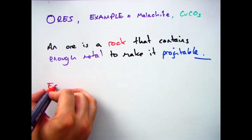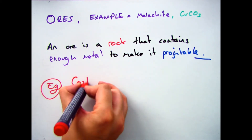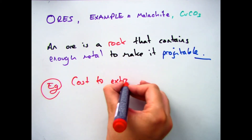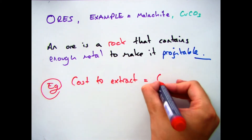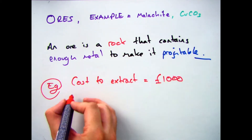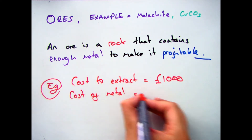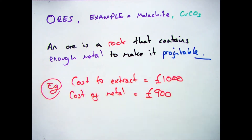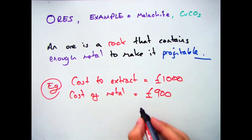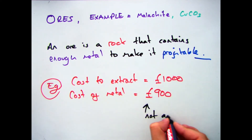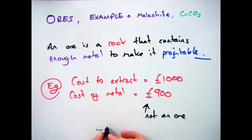So if I had a metal that costs £1,000 to extract, but I'm only going to get £900 from it, I'm not going to make a profit — I'll be down £100. Therefore we class that as not an ore; we class it as a low-grade ore, because it's not profitable to extract it.